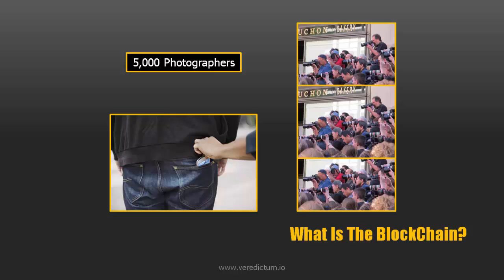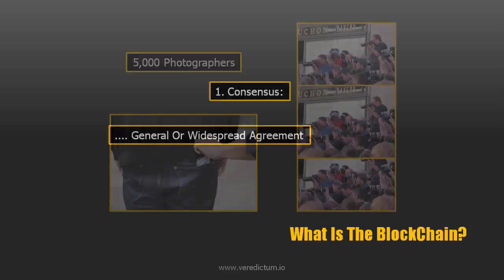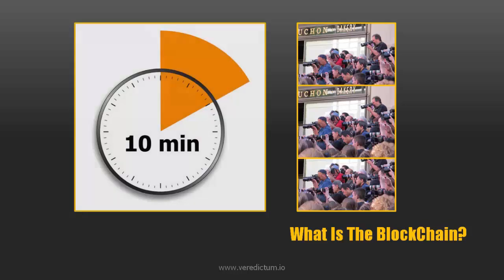Equally, if I wanted to change the facts, I would have to persuade each of those 5,000 independent photographers to change their images one at a time. Now that's just not going to happen. Because there's a consensus of opinion from everybody involved that says here's the photographic evidence — I stole your smartphone. Now let's put some more pressure on me: let's say I had to persuade those 5,000 independent photographers to change each of those images in the space of 10 minutes only. Now that's an almost impossible task.